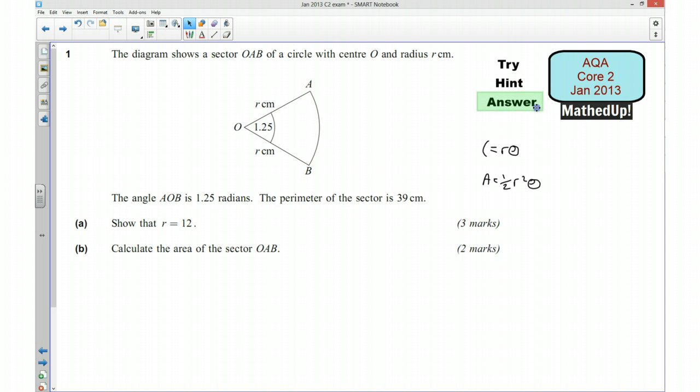Okay, in this part of the video I'm going to go through the answer to this question. So first of all we knew that the length of this arc is equal to r theta, and we also know that the perimeter is 39 cm. So that means r plus r plus r theta gives us 39 centimeters. For part a I'm going to say r plus r plus r theta is equal to 39 centimeters.